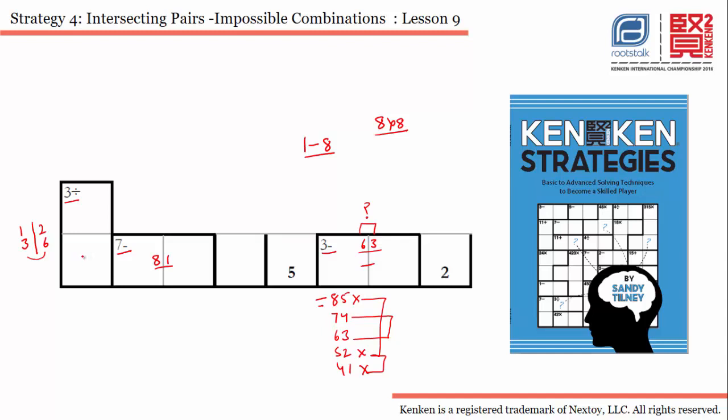We cannot use 1 or 3 in this particular cell because we already have 1 and 3 in this row. Same with this - if we try to use 2 and 6, which will also be impossible because we already have 2 and 6 in this row. That proves that this particular option of using 6 and 3 is incorrect.